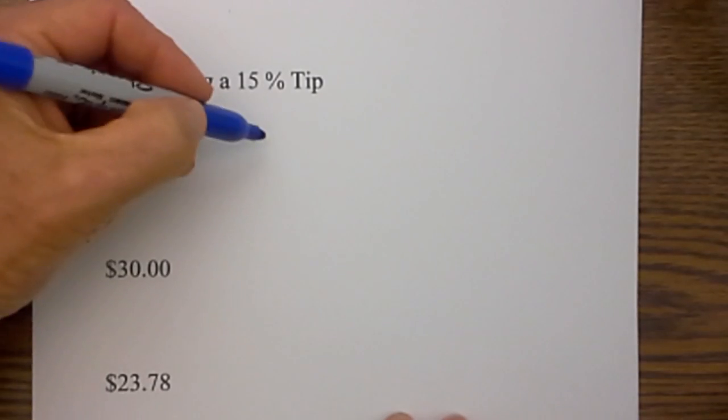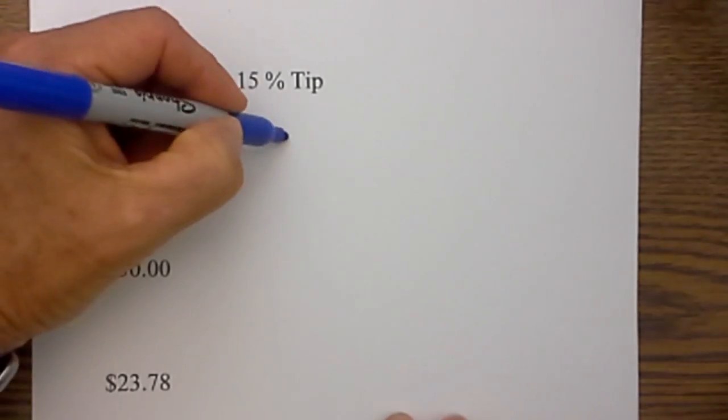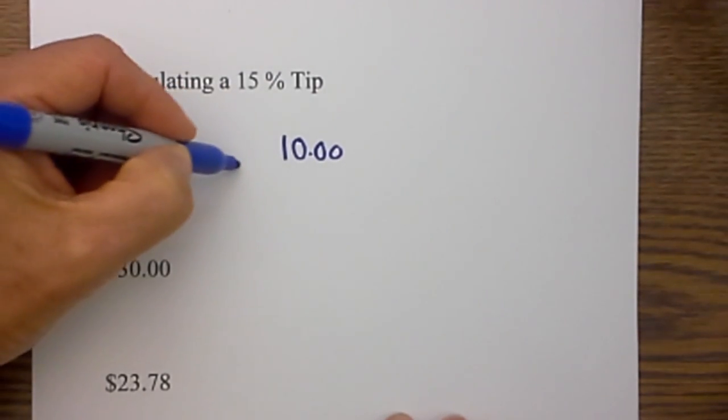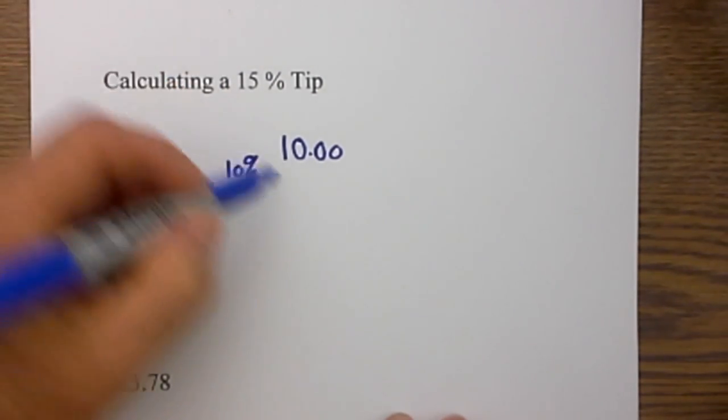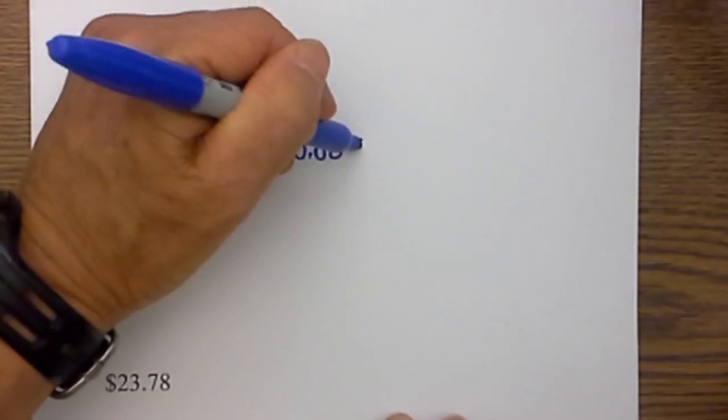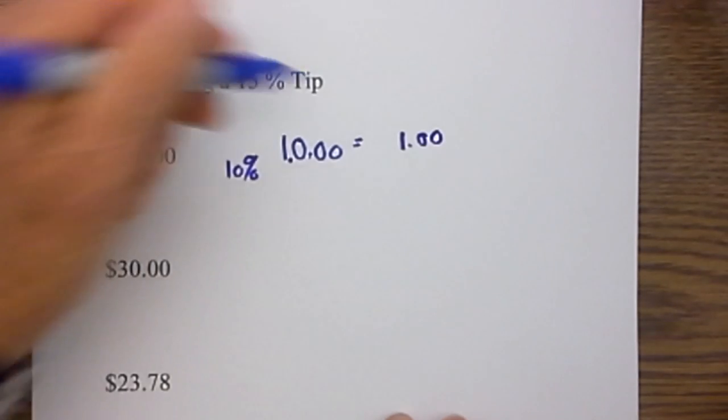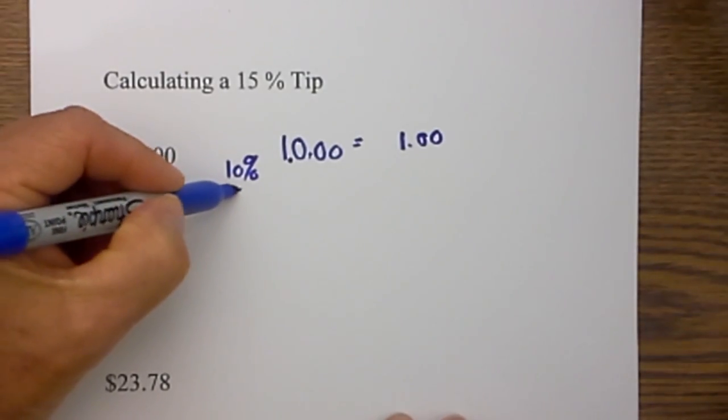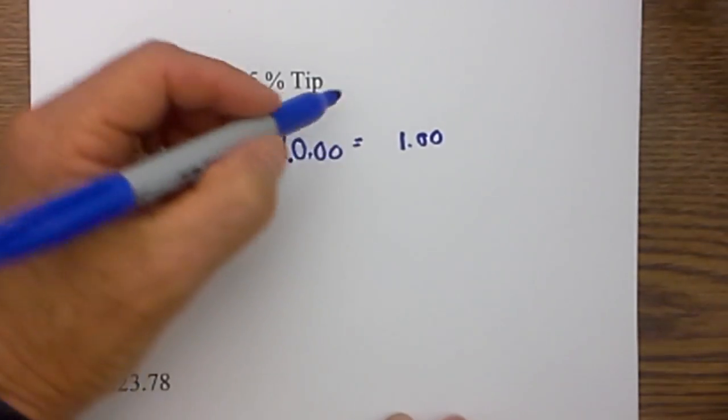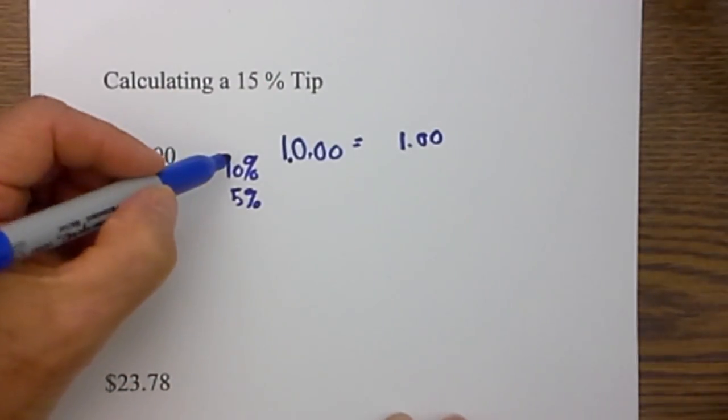First we have $10 and we are going to tip 15%. What I do is the first step is to figure out what a 10% tip would be and that is very easy. You can just move the decimal one place to the left so that becomes $1, and then what I do next is find what would be a 5% tip by taking one half of the 10% tip.